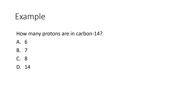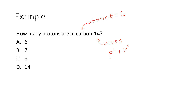Let's look at a couple of examples of how these concepts would appear on a quiz or a test. If we're looking for how many protons are in carbon-14: the 14 is the mass number, which is the number of protons plus neutrons, so that's not our answer. To get the number of protons we need the atomic number, and for that we go to the periodic table. Carbon's atomic number is 6, so there are six protons in carbon-14.